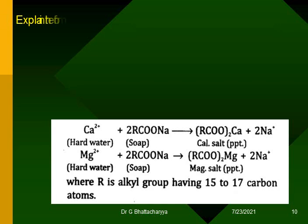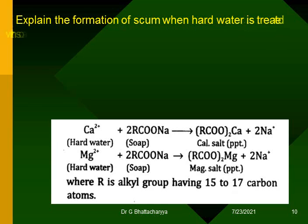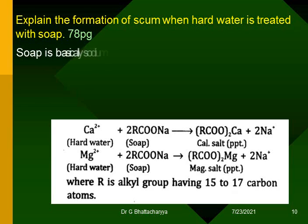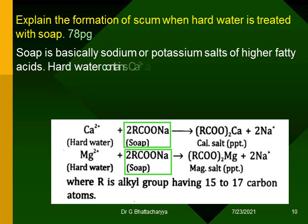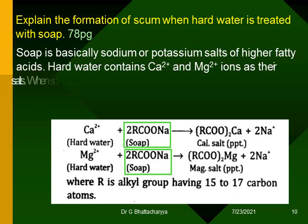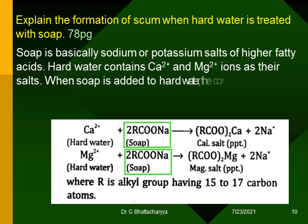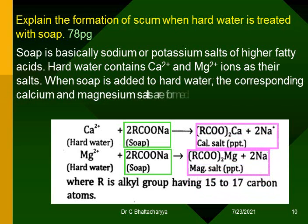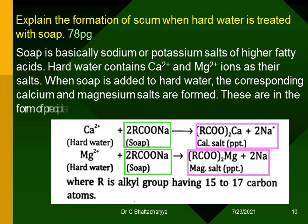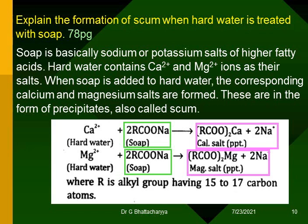Explain the formation of scum when hard water is treated with soap. Soap is basically sodium or potassium salts of higher fatty acids. Hard water contains Ca²⁺ and Mg²⁺ ions as their salts. When soap is added to hard water, the corresponding calcium and magnesium salts are formed. These are in the form of precipitates, also called scum.